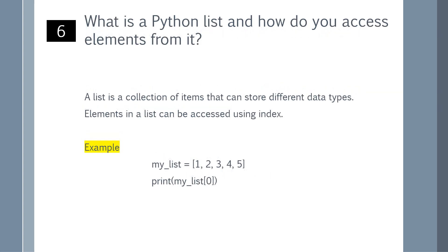What is a Python list and how do you access elements from it? A list is a collection of items that can store different data types. Elements in a list can be accessed using an index. You can refer to the example shown on the screen.